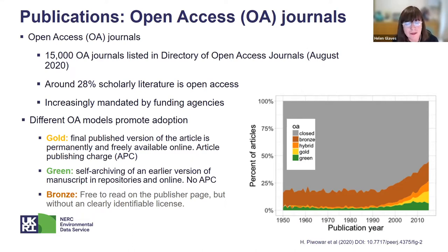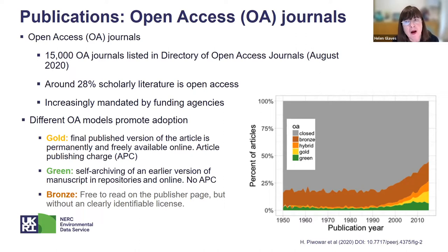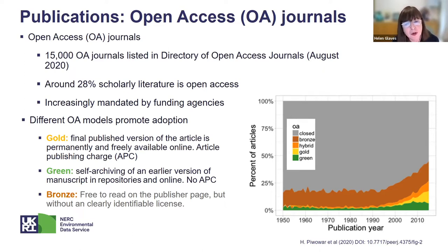Many funding agencies are increasingly mandating open access publishing. One reason many open access journals have relatively low journal impact factors is that many of them are quite new — none have the longevity of Nature, Science, or PNAS. It's also worth saying something about open access journals in terms of publishing models, because although many funding agencies are mandating open access publishing, it is a complex field due to the different open access models.